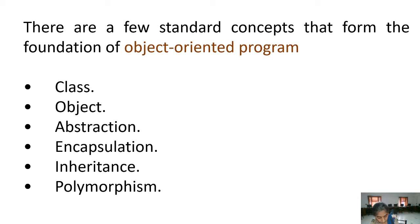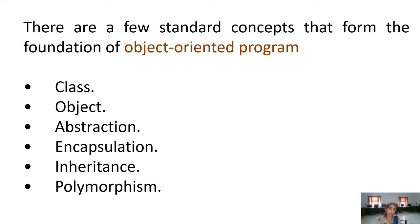There are few standard concepts that form the foundation of object oriented programming, and the key reason we are so obsessed with it is the feature of classes. Traditional languages did not follow any particular approach — programs were randomly written. The problems with those languages were: there was no reuse facility, they used numerous jump statements which could not be explained on the basis of valid logic, there was no concept of local variables, and it was very difficult to maintain large programs in those types of languages.